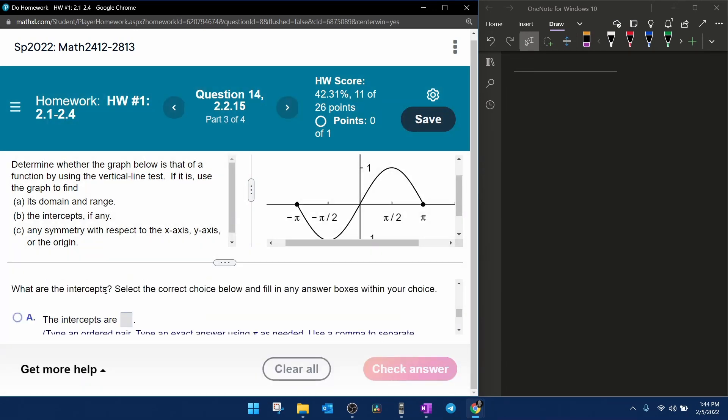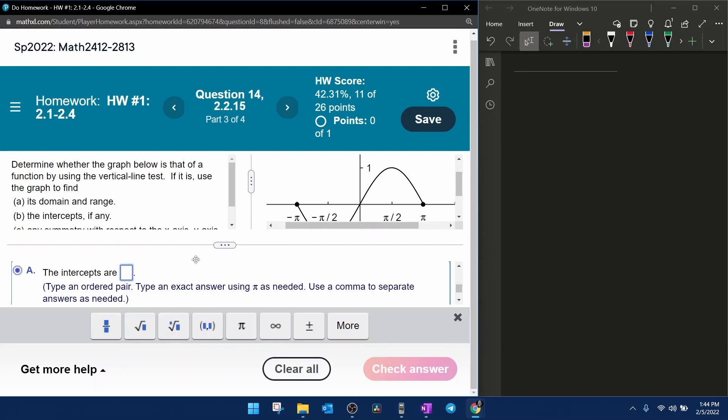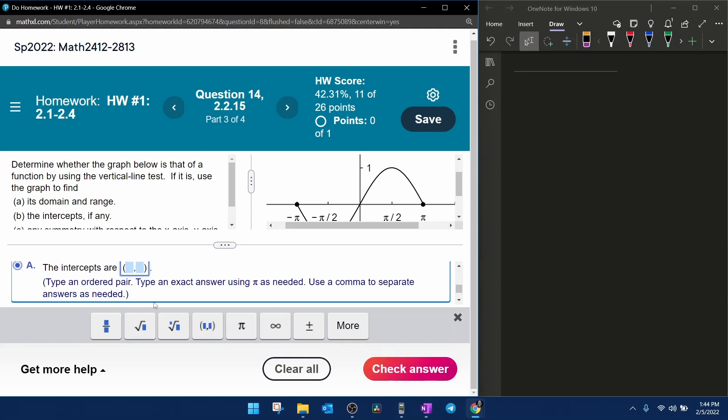And then it says, what are the intercepts? Select the correct choice below. Type an ordered pair, type an exact answer using pi as needed. Let's input the intercepts. So the x-intercepts as an ordered pair would be negative pi comma zero, comma, got to separate the intercepts with a comma. Look, the graph touches at the origin, zero comma zero, and the other x-intercept that I see is over here at pi. So that's going to be pi comma zero.